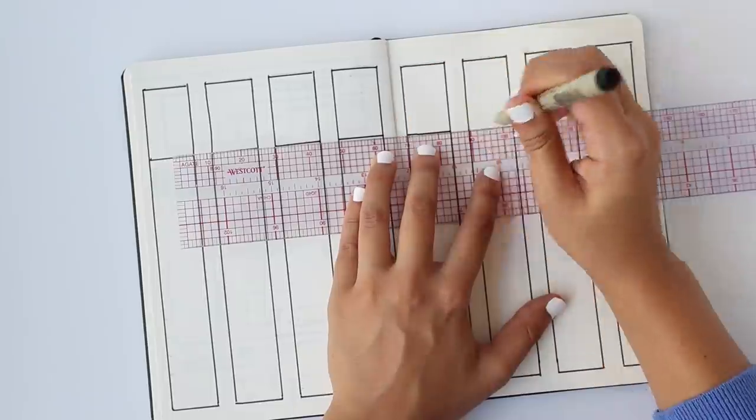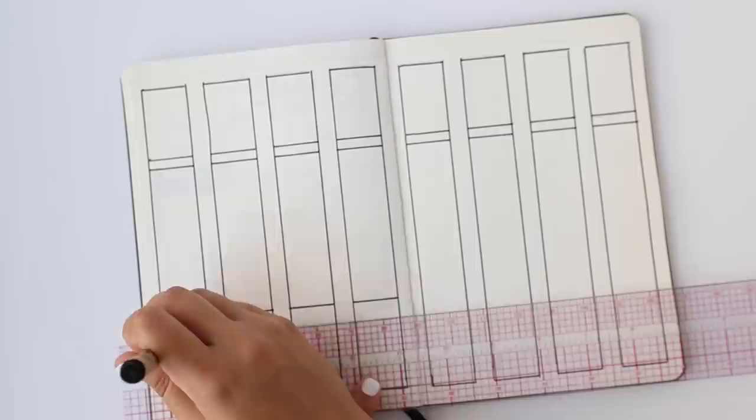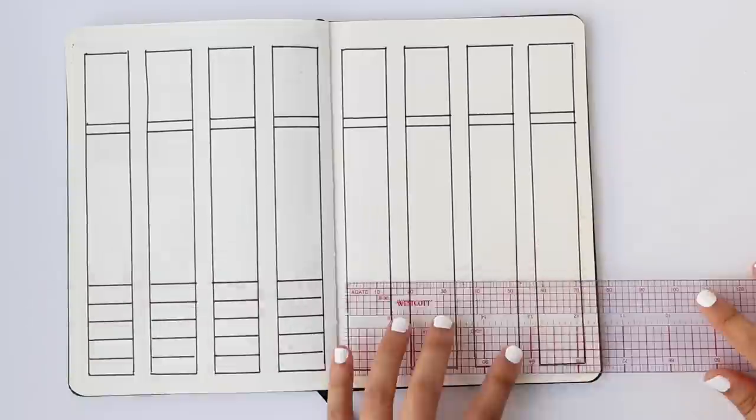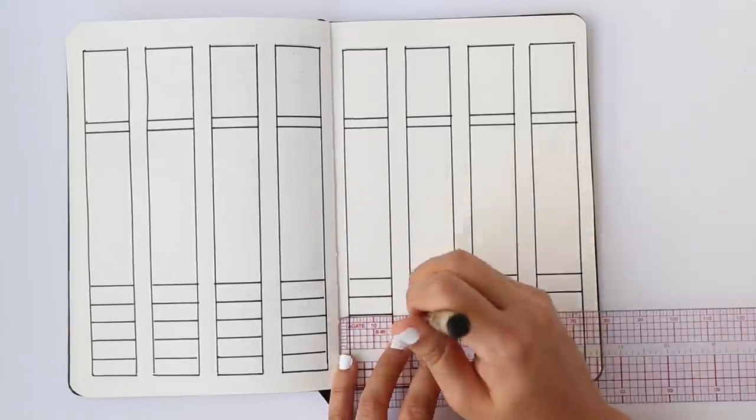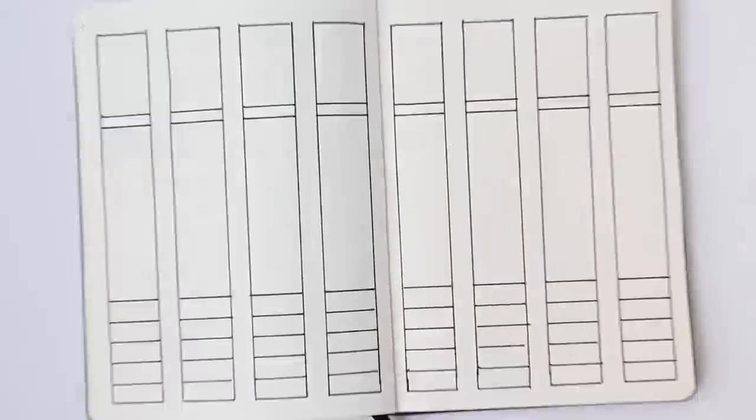There's a column for each day of the week and then there's an eighth column that is for general events for this week, general to-dos for the week, and any big events that are coming up the following week.